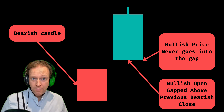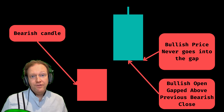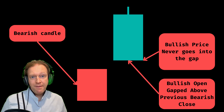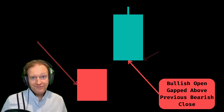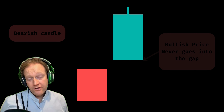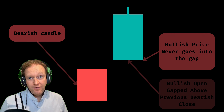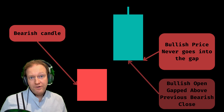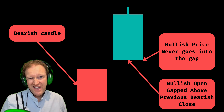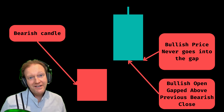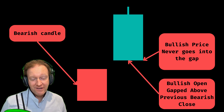Secondly, the opening price of the bullish candle needs to gap above the previous open of the red candle. Thirdly, the price movement of the green candle can never close that gap, so we can't have something like a long wick that goes down and covers that gap.